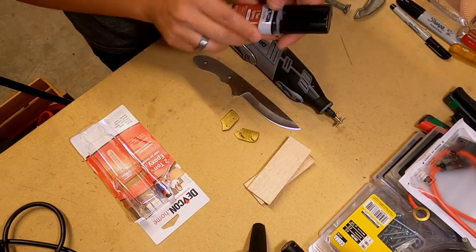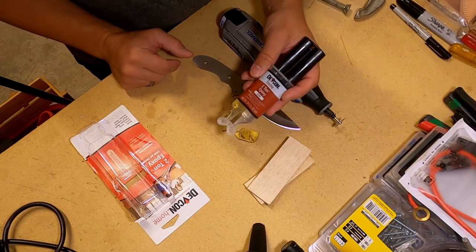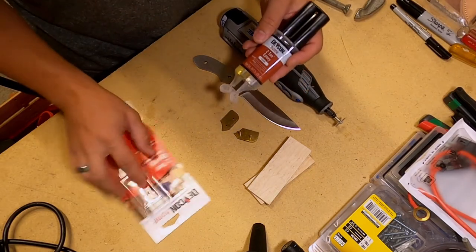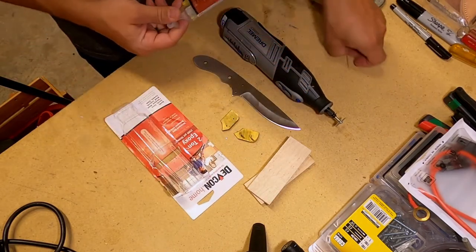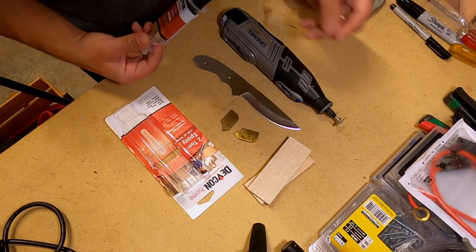Let's go ahead and start by mixing up some of the two-ton epoxy that was provided. I'm going to mix it in this cup here, and I've got a toothpick to help me do that.